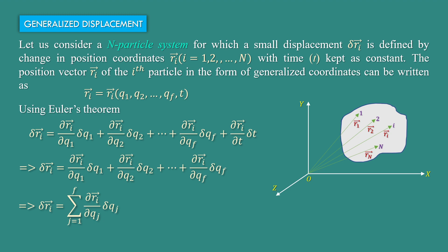we have delta ri is equal to del ri by del q1 into delta q1 plus del ri by del q2 into delta q2 plus up to del ri by del qf into delta qf plus del ri by del t into delta t. Here in the last term, the value of delta t is 0 because the time is constant, which implies delta ri is equal to del ri by del q1 into delta q1 plus del ri by del q2 into delta q2 plus up to del ri by del qf into delta qf.